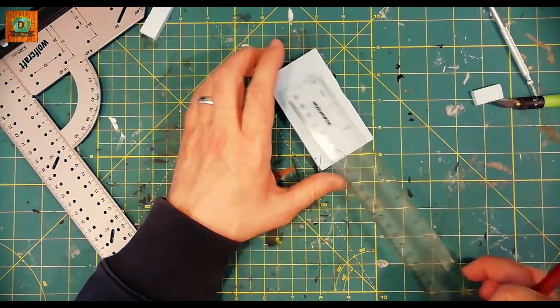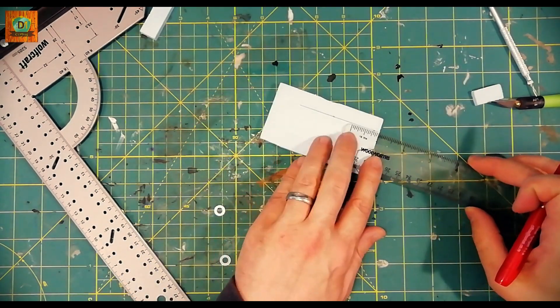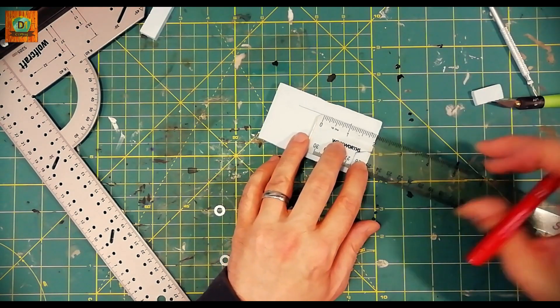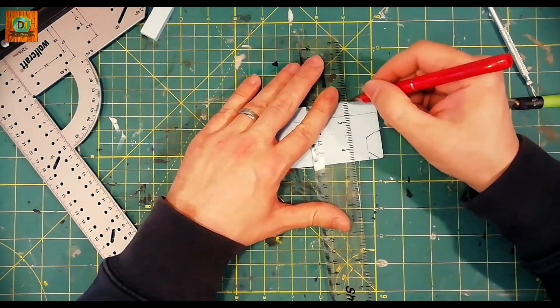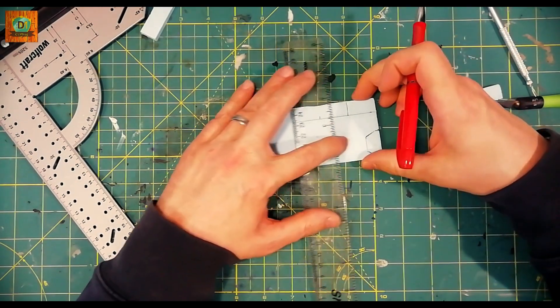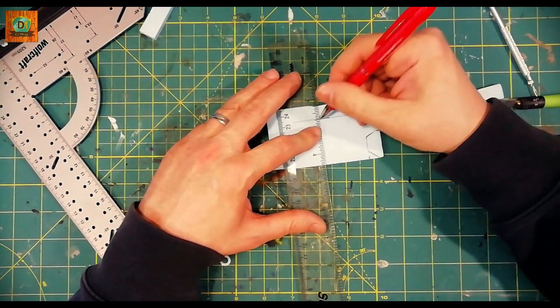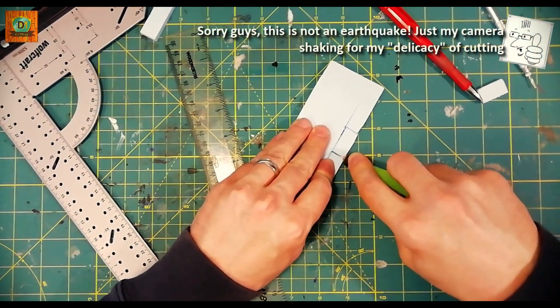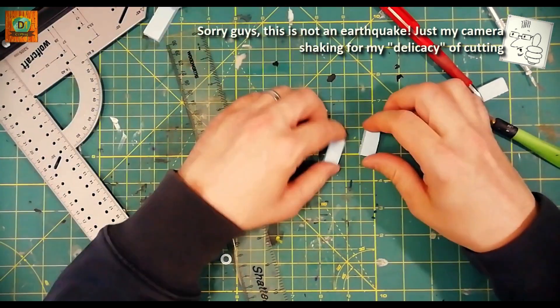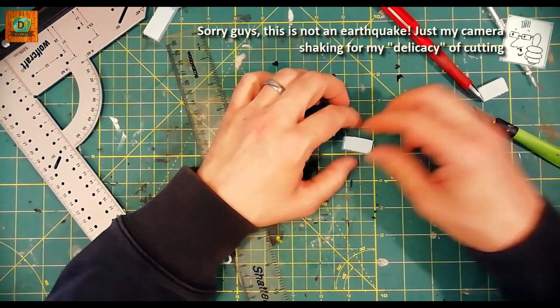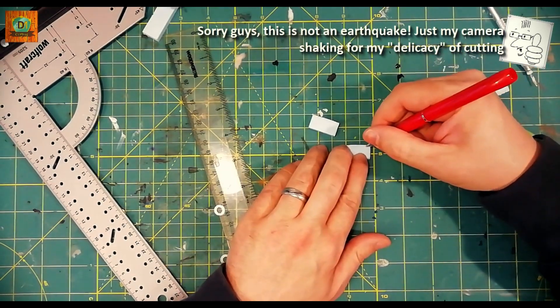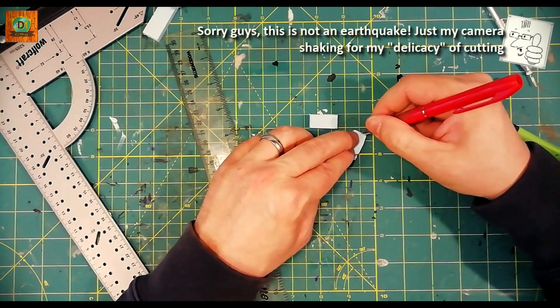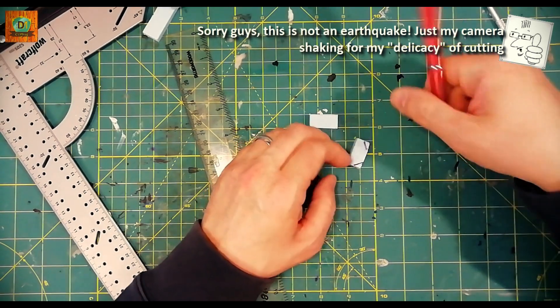For the legs of the table, I'm cutting a couple of pieces of foam that are one inch large and a half inch high. I'm giving them a random shape with my knife, using the first one as template for the second, as you can see here.